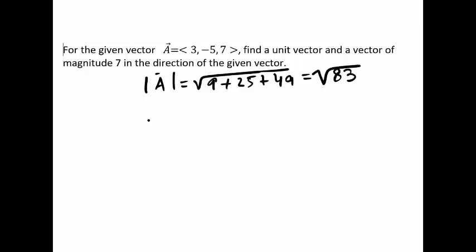Now the unit vector, let me call it u, is the unit vector in the direction of A. That will be vector A divided by the magnitude of vector A.